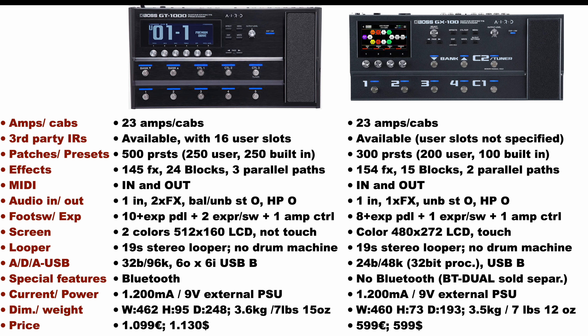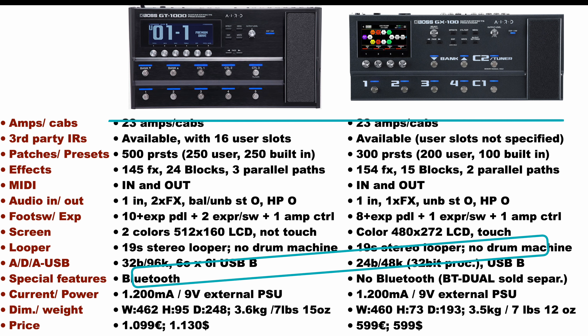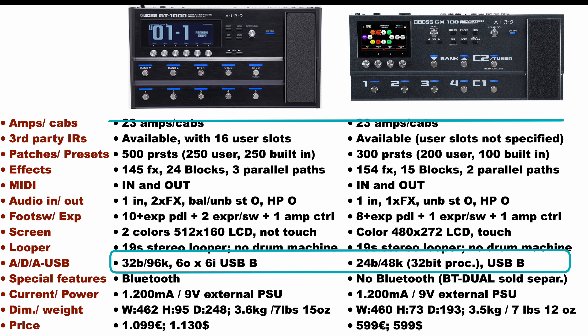So summarizing, the units should sound the same, having the same amps and the same modeling approach. The converters of the GT1000 are superior, but I think the sound difference is going to be negligible. With the GT1000 you can build much more complex effect chains with more blocks and more parallel paths compared to the GX100, even if the 15 blocks of the GX100 are pretty compelling, considering that typically other units in this price range offer 10 to 12 effect blocks.